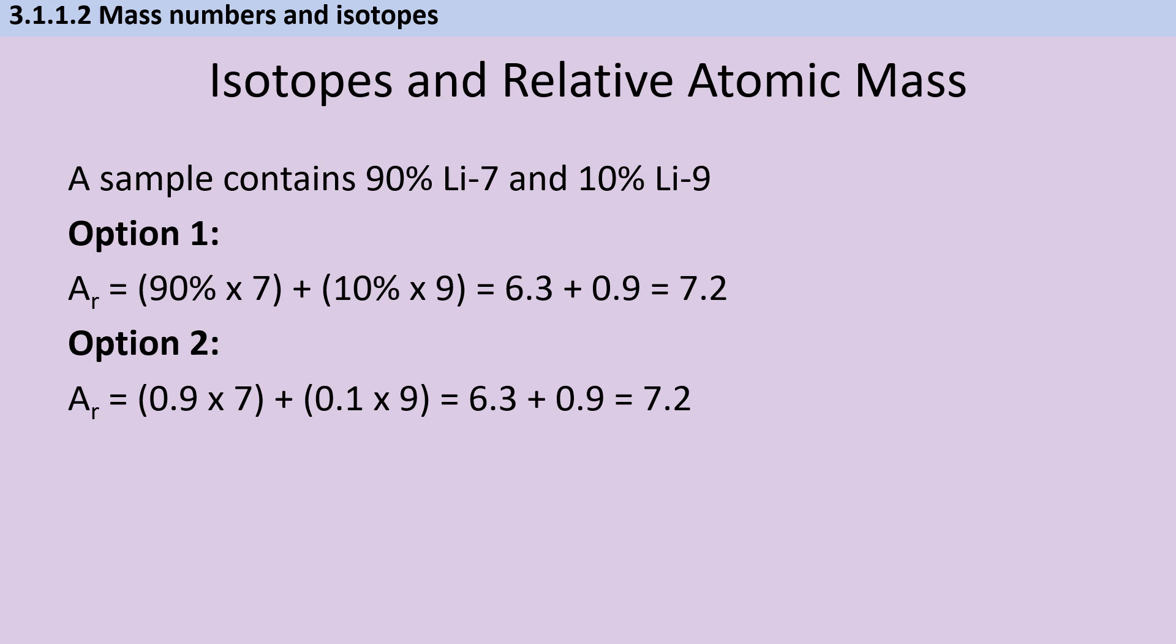In the second approach, which is what I personally prefer, we use decimals. So we use 0.9 in place of 90% and 0.1 in place of 10%.